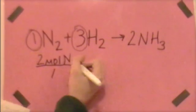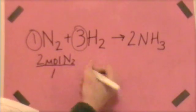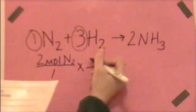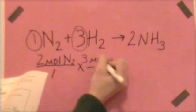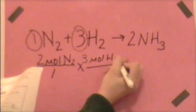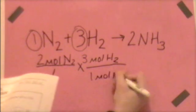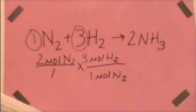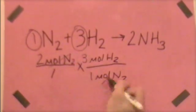Let's find the mole ratio between nitrogen and hydrogen. We have 1 mole of nitrogen and 3 moles of hydrogen. So let's multiply by that ratio. 3 moles of hydrogen over 1 mole of nitrogen.